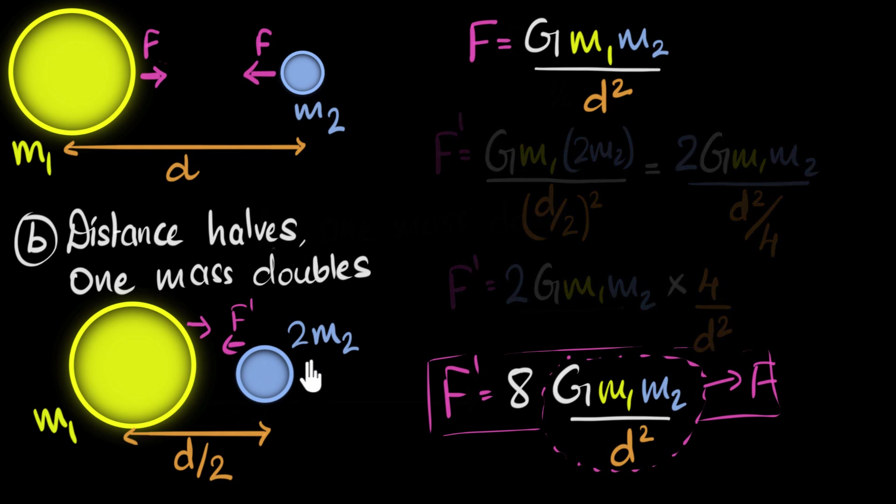And again, if we were to do this in our head, what we would do is we could say, look, the mass has doubled. And as a result, there is a 2 in the numerator. And the distance has become half. There won't be a half in the denominator because that half has to be squared, d squared. So that half squared becomes 1 fourth in the denominator. That's basically what we did with the steps. And 2 divided by 1 fourth, that becomes 8. And that's how the force becomes 8 times as much as before.